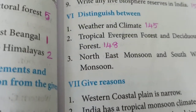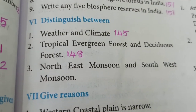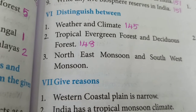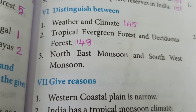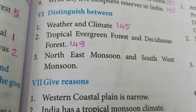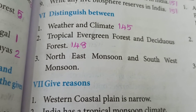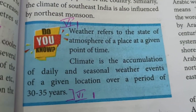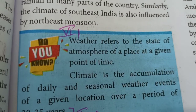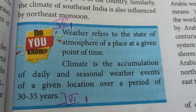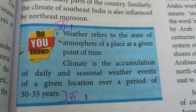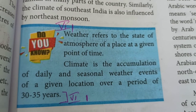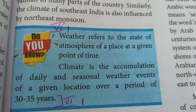Next, distinguish between weather and climate. We have 2 points to write. The answer is on page 145, under the side heading 'Do You Know?' There is only 1 point for each in this page, so just write one point for each. The first paragraph is for weather and the second paragraph is for climate.